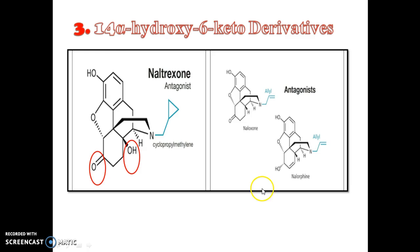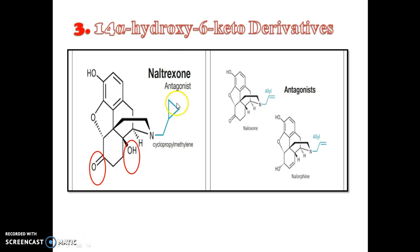Next, the 14-alpha-hydroxy-6-keto derivatives. There are naloxone and naltrexone. Naloxone has an N-allyl group whereas naltrexone has an N-cyclopropylmethyl group. They are antagonists at all opioid receptor types.